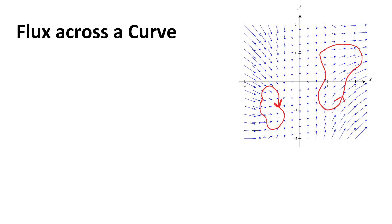In this video we're going to talk about flux across a curve. I'll talk about the idea first, then the formula, and eventually do an example. I have a vector field drawn here with a couple of different curves. The idea is that we want to measure how much of the vectors in the vector field cross the curve. When we did work, the work integral was the integral of F dot T ds — measuring how much the vectors lined up with the unit tangent vector. Here we basically want to do that perpendicular to T, so we want to use a normal vector to the curve.